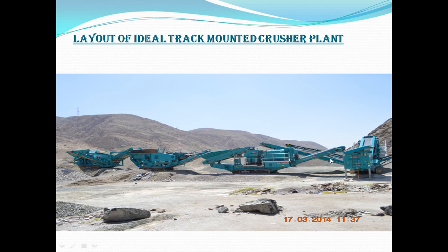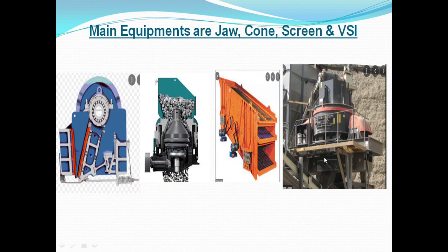Now, if you see these, these are the main equipment involved in a crushing plant. This is the primary crusher called the jaw crusher, this is the secondary cone crusher, this is the screen separating machine, and this is the sand making machine which is called VSI.